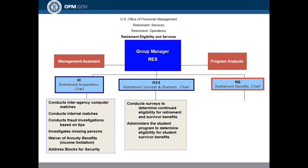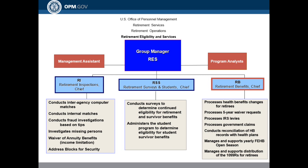The second Chief is myself for Retirement Surveys and Students, responsible for conducting surveys to determine continued eligibility for retirement and survivor benefits, and administering the student program to determine eligibility for student survivor benefits. Third is the Retirement Benefits Chief, responsible for processing health benefits changes for retirees, five-year waiver requests, IRS levies, government claims, reconciliation for health benefits records with health plans, managing yearly federal employee health benefits open season, and distribution of the 1099Rs for retirees.